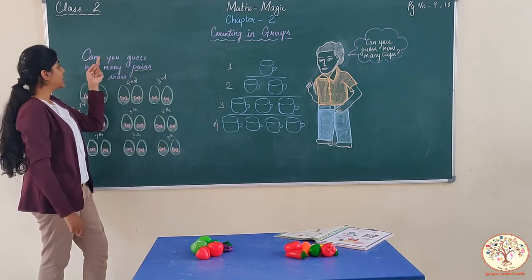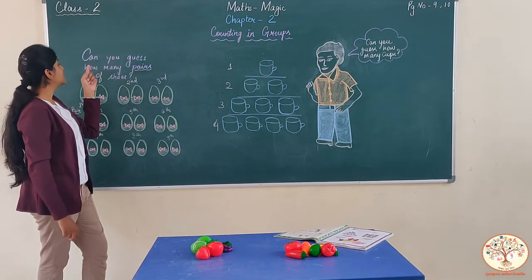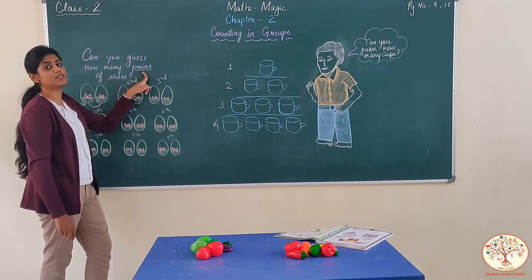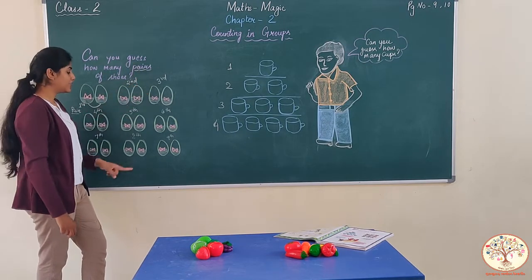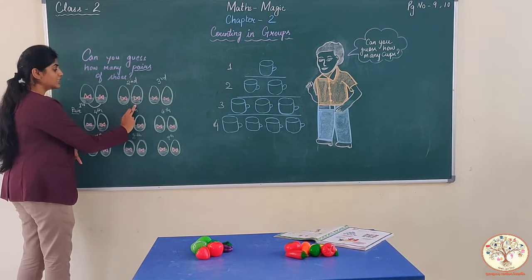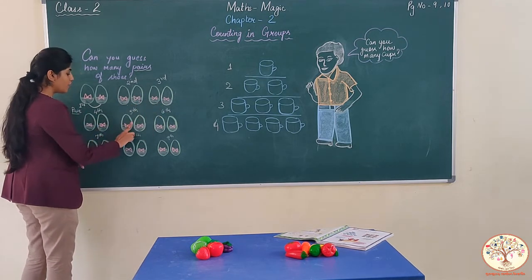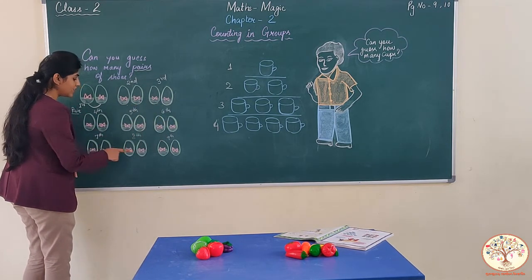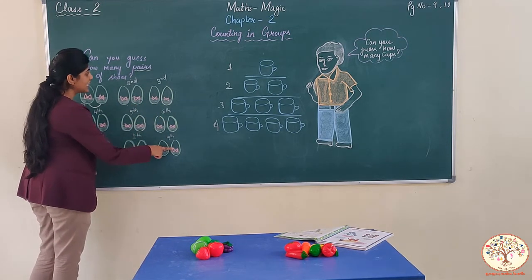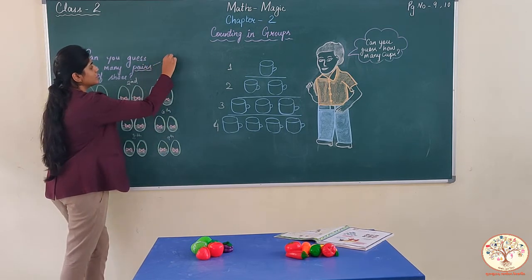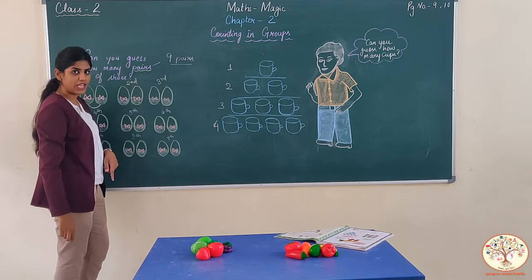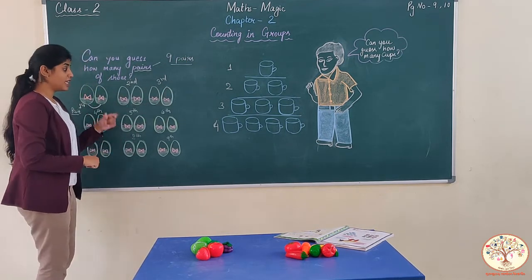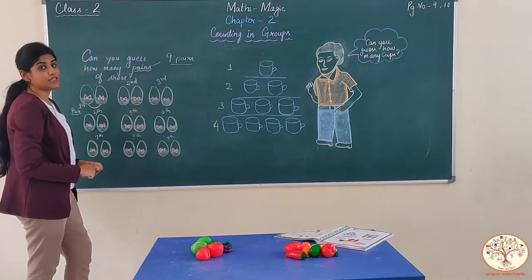So what is the question? Can you guess how many pairs are given? Let's count the pairs: one, two, three, four, five, six, seven, eight, nine. So how many pairs? Nine pairs. Don't get confused — nine pairs hain.